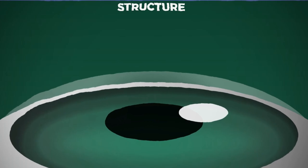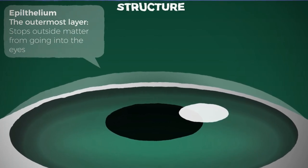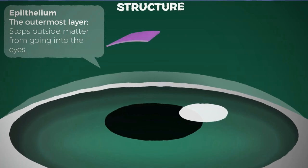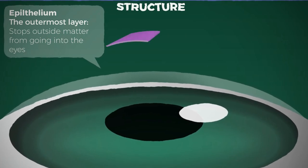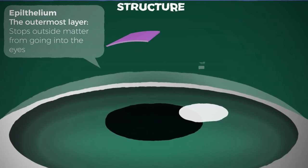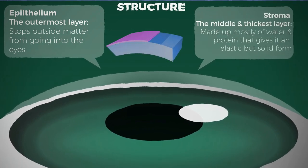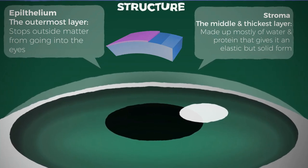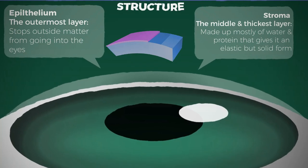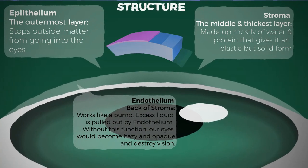The cornea has three main layers. The epithelium is the outermost layer — it stops outside matter from getting into your eye and also absorbs oxygen and nutrients from tears. The stroma is the middle and thickest layer; it lies behind the epithelium and is made up mostly of water and proteins that give it an elastic but solid form.